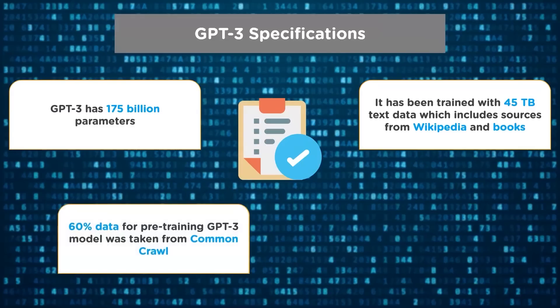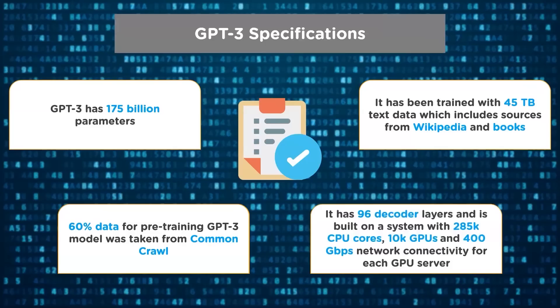60% of the data for pre-training the GPT-3 model was taken from CommonCrawl, an organization that crawls the web and freely provides its archives and datasets to the public. CommonCrawl's web archives consist of petabytes of data collected since 2011, with Amazon Web Services hosting those archives through its public datasets program since 2012. Using all this data, GPT-3 taught itself the statistical dependencies between different words, encoded as parameters in its neural network. GPT-3 has 96 decoder layers and is built on a system of 285,000 CPU cores, 10,000 graphical processing units, and 400 Gbps network connectivity for each GPU server.